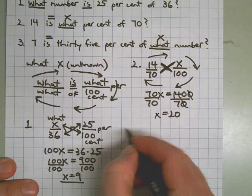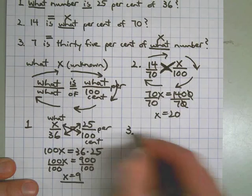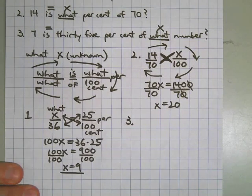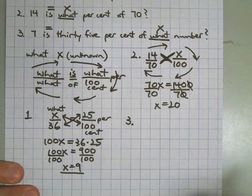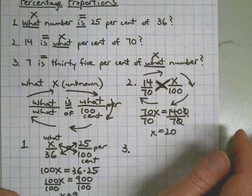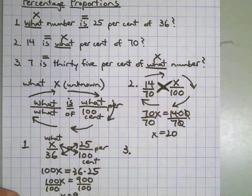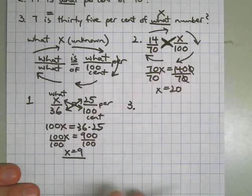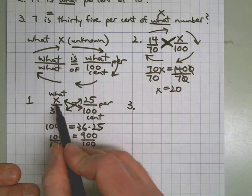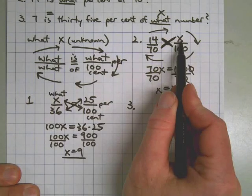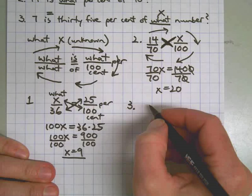Once again, it's all in the setup. Let's do the third one. The reason I did three problems like this is there are three and only three possible ways you will get this question. You can have the what in the beginning, the middle, or the end of the question. And depending on where it is, the X will be in one of three places. Number one had it at the beginning. Number two had it in the middle. So you guessed it. Number three will have it at the end. Here's the question.